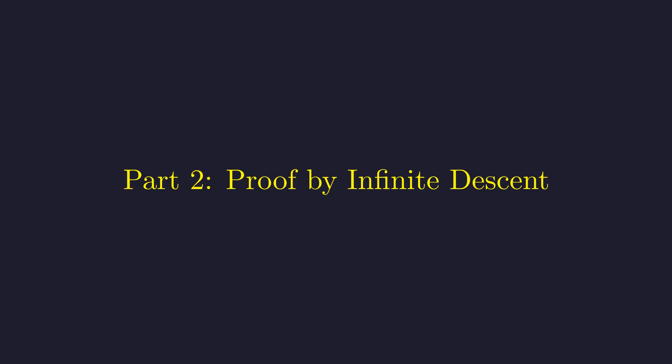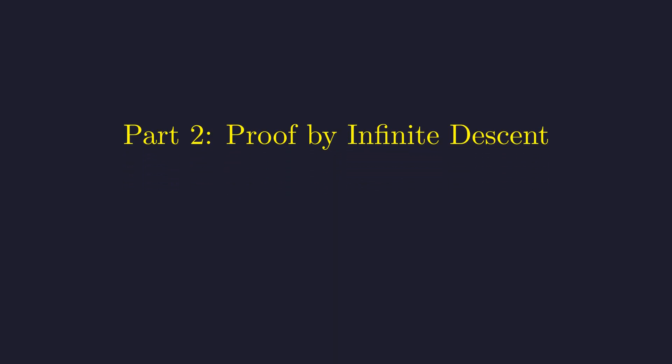Now comes the really clever part. To prove the other direction, we're going to use one of my favorite proof techniques in all of mathematics: Fermat's method of infinite descent. It's this beautiful idea where you show something can't exist by proving you could always find something smaller. Here's the setup. Let's suppose, just for the sake of argument, that there exists a minimal counterexample.